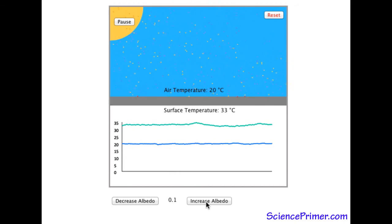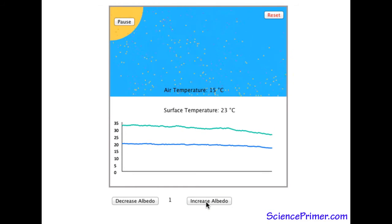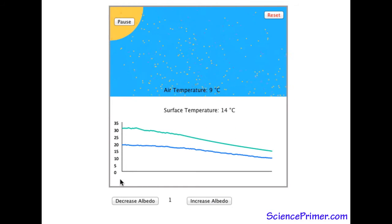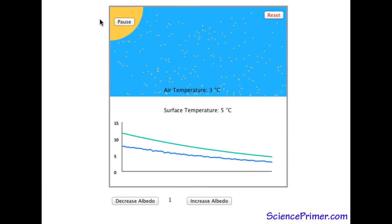Setting the albedo to 1 causes all the energy to reflect. With no additional energy input, the temperature of both the surface and the air rapidly fall back to 0.